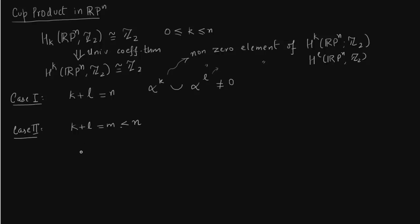So case 2, this is equal to M which is less than or equal to N. More precisely, case 1 is the application of proposition 3.38 on page 250, just in case you are wondering why case 1 is non-zero.